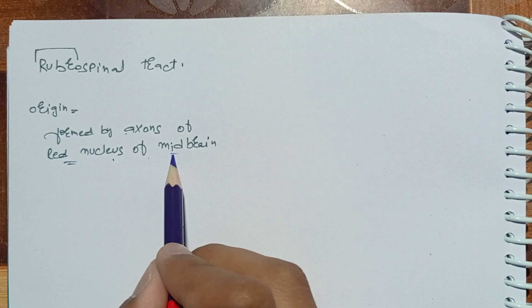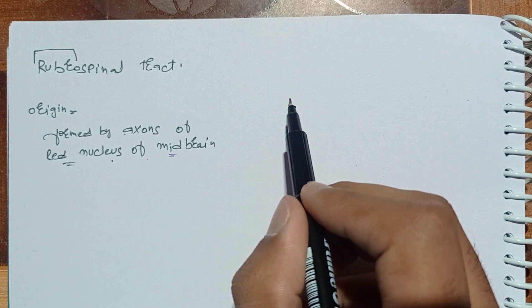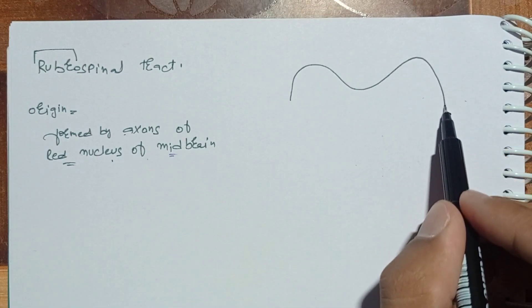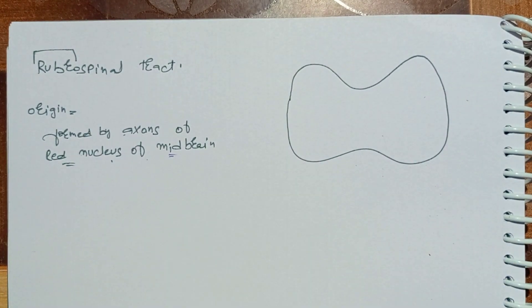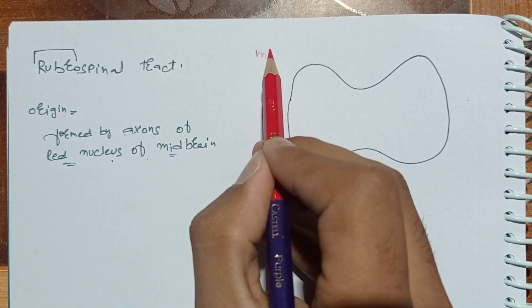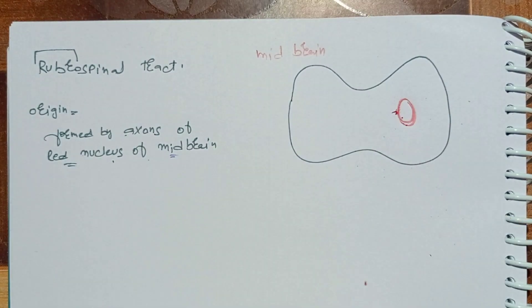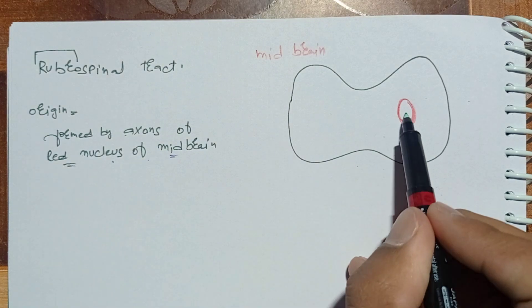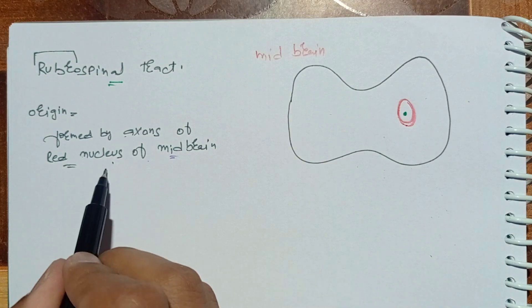Along with the theory, I will show you the diagram of the rubrospinal tract. I will draw the midbrain. This is the midbrain, and this right here is the red nucleus. From the red nucleus, this rubrospinal tract originates.